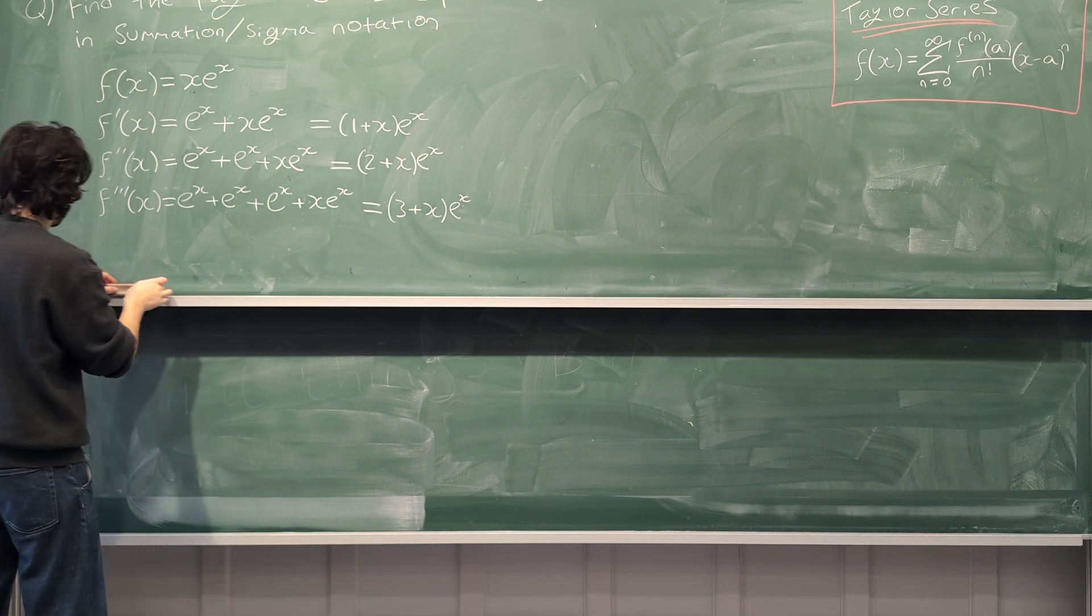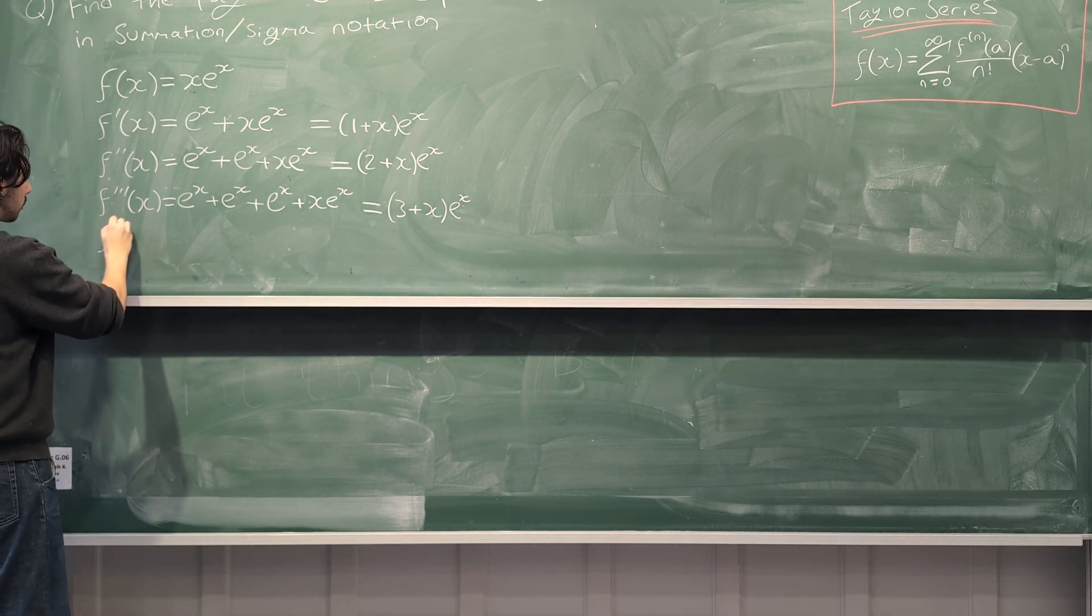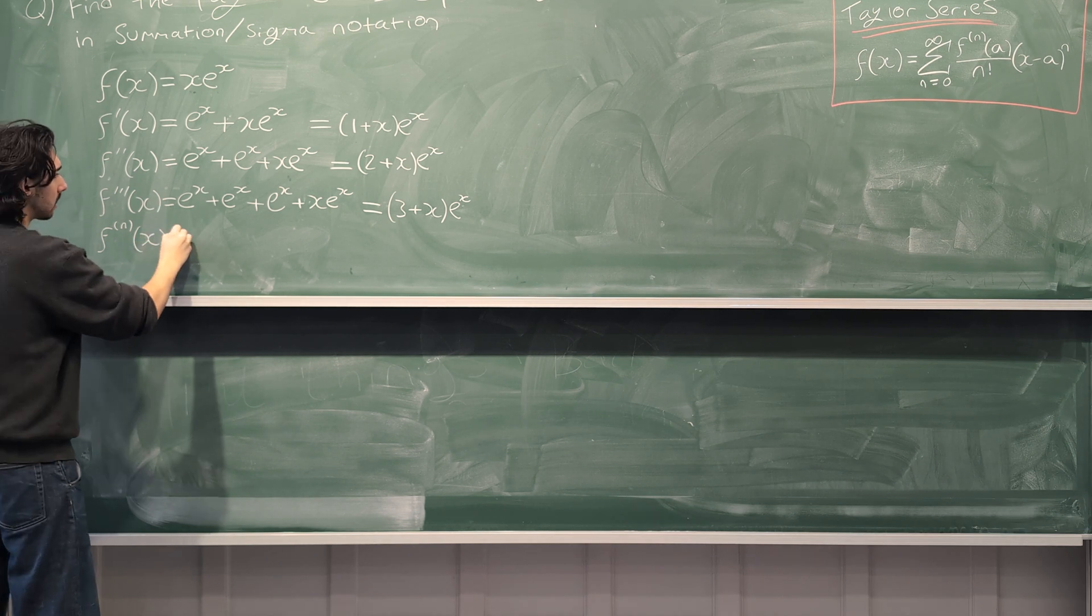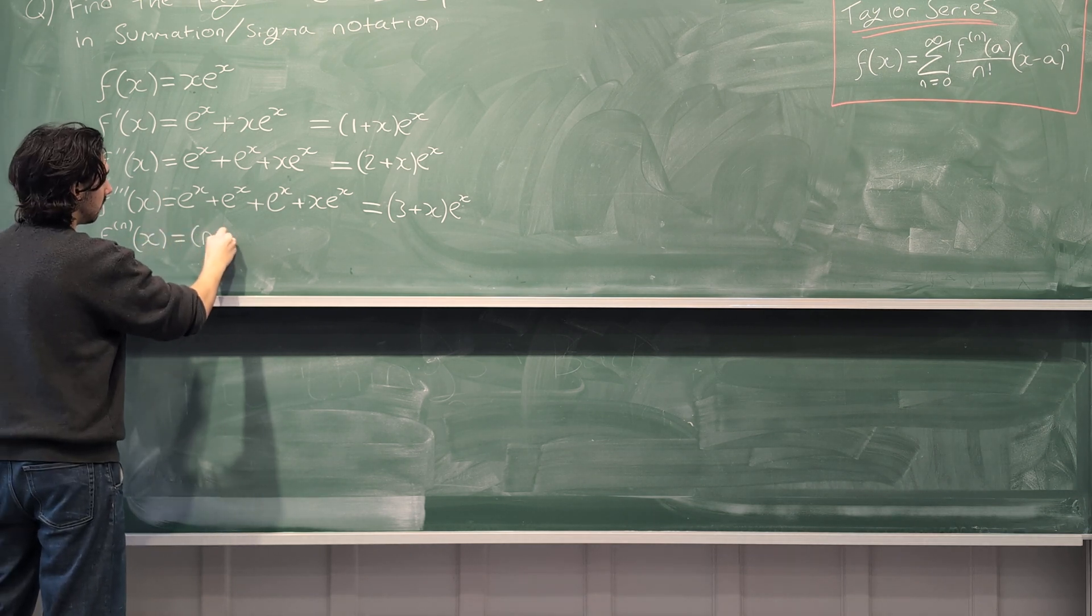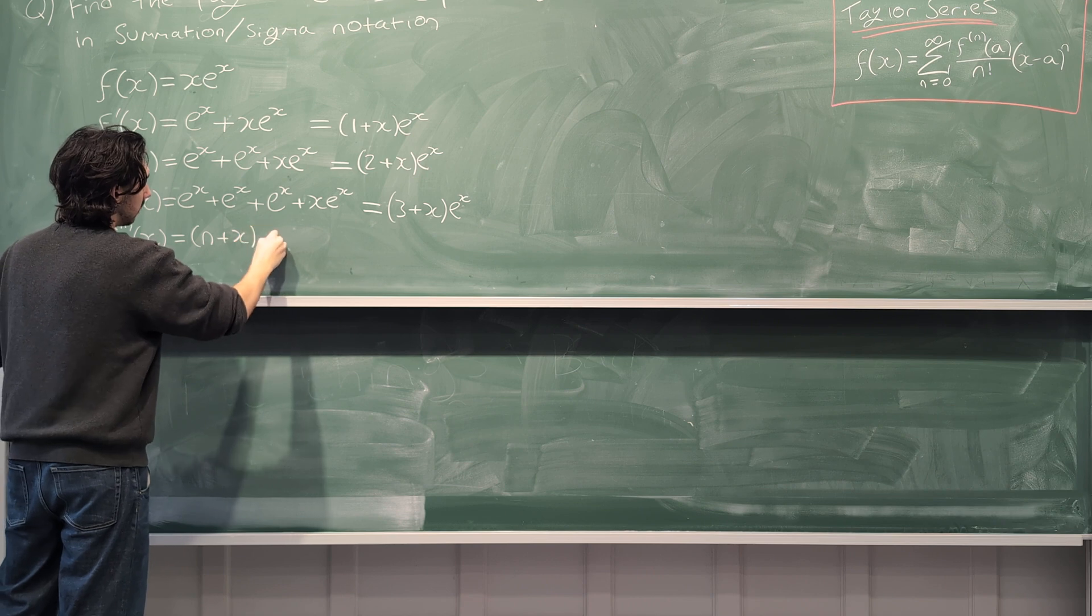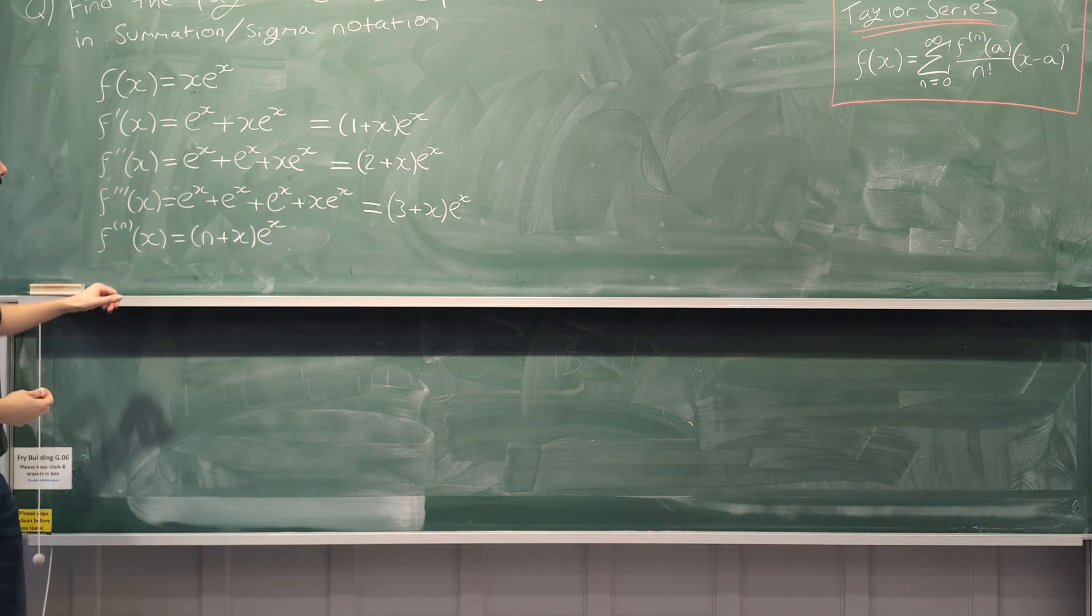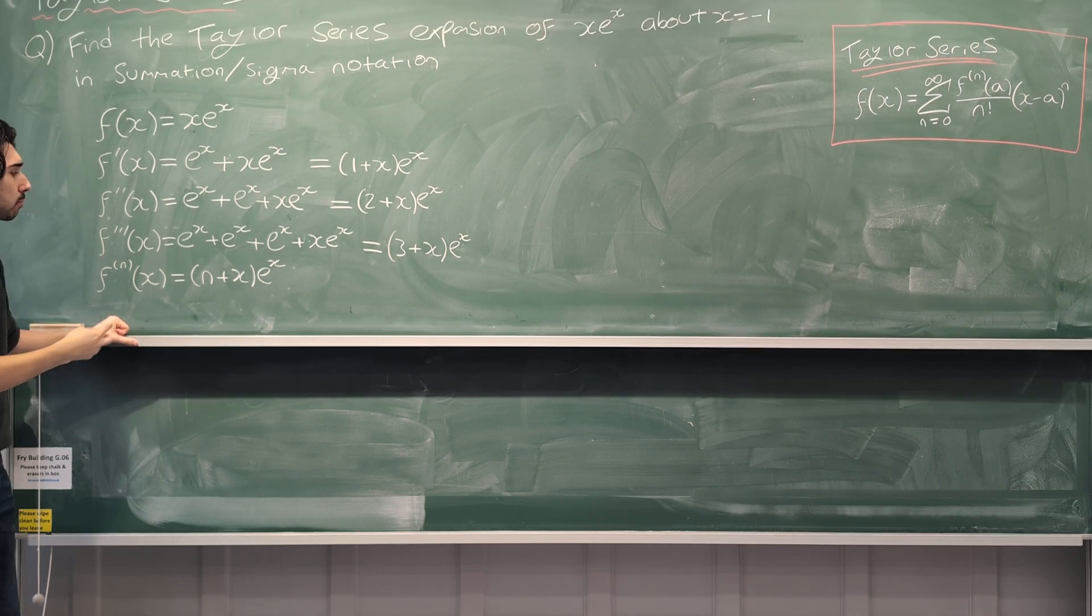So hopefully you can see that the nth derivative of xe^x is (n+x)e^x. Hopefully that makes sense. Cool, that's the first step to find an expression for it.